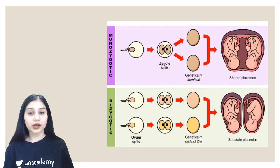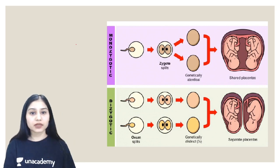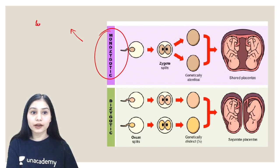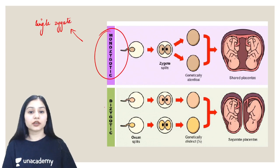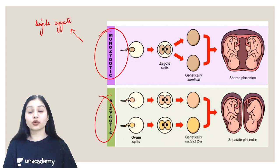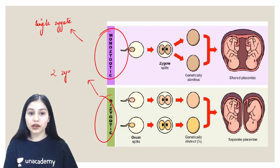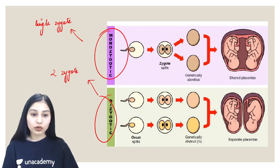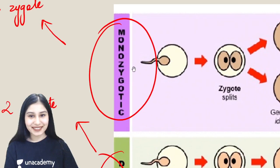So students, sabse pehle main aapko ye bata de deta hoon ki jo aapke twins hote hai, these are of two types. One is monozygotic, that is formed from a single zygote - yeh form hote hai ek single zygote se. Aur agar main baat karun, dizygotic twins ki - yeh form hote hai two zygotes se. Mono means 1 and di means 2. Now let's understand one by one what is happening in both the cases.